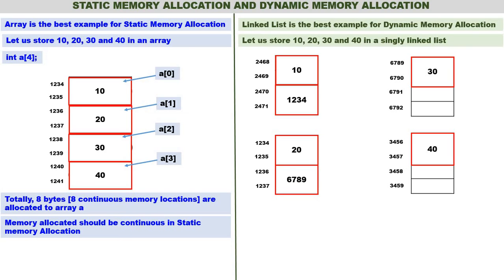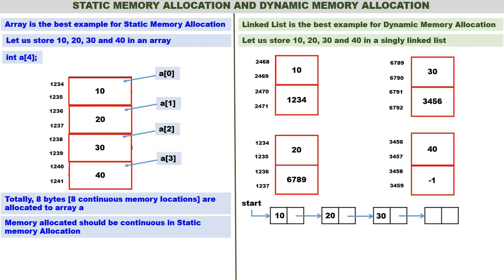Along with 30 we store the address of 40, which is 3456. Since 40 is the last number, we write minus 1 — a null value indicating the end. We now represent this as a linked list: 10 → 20 → 30 → 40.